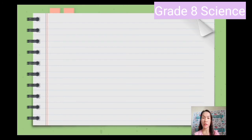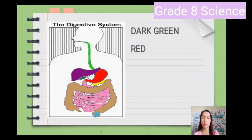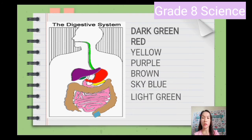Let's have a short exercise about the parts of the digestive system. All you have to do is identify the part of the digestive system — each part is color coordinated. The colors are: dark green, red, yellow, purple, brown, sky blue, light green, and pink.